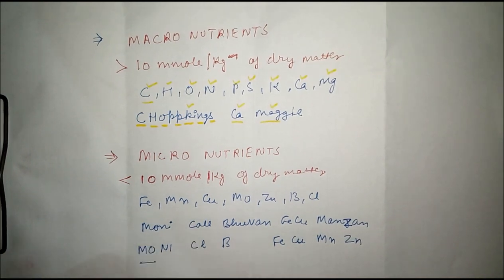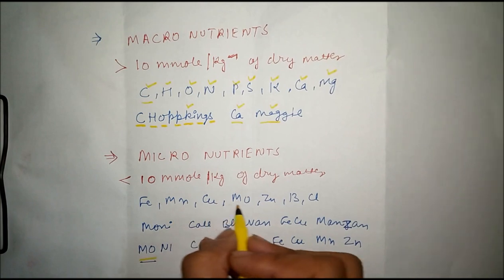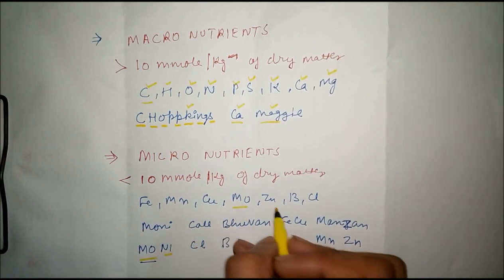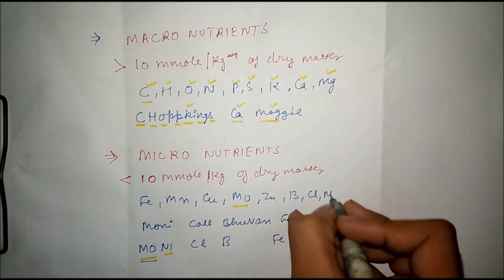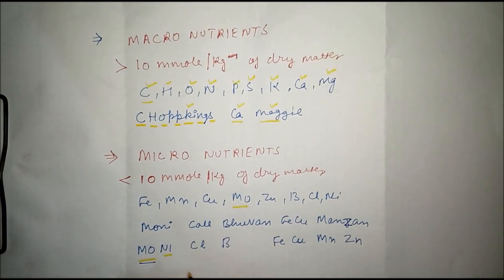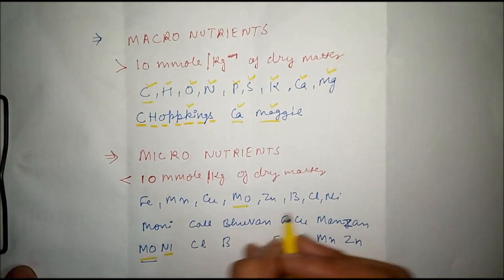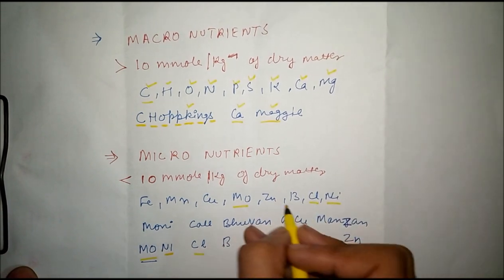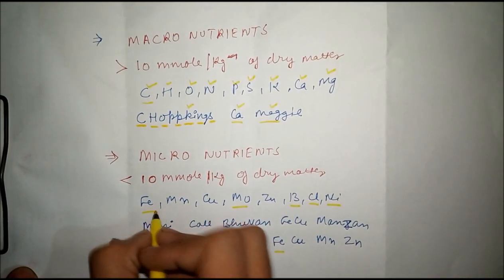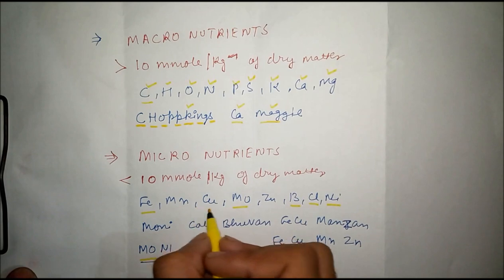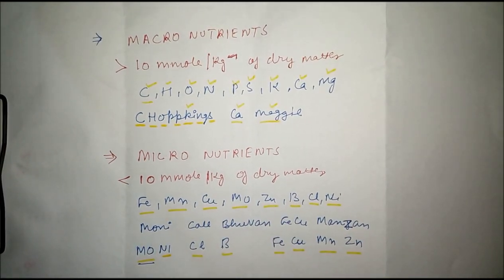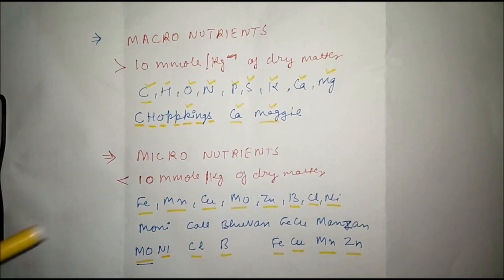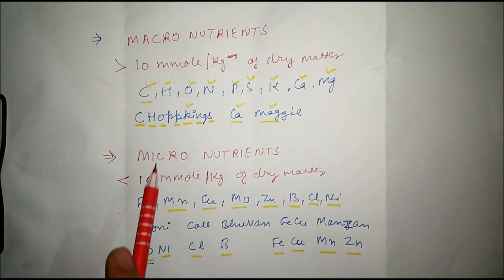So the elements we have are molybdenum, nickel, chlorine, boron, iron, copper, manganese, zinc. This is how you can learn very easily macronutrients and micronutrients within 10 seconds.